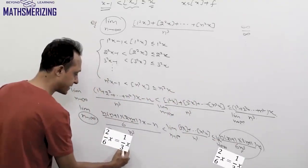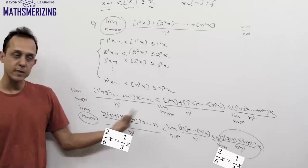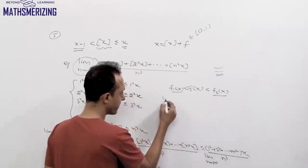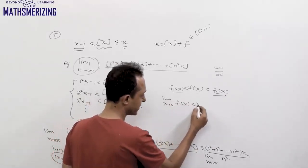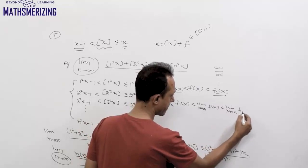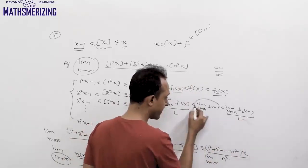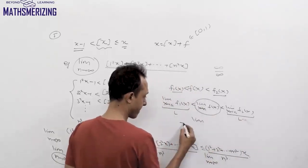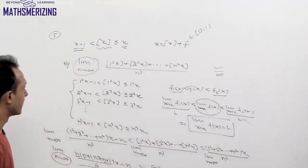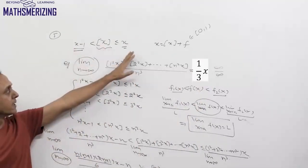Both the left-hand side and right-hand side limits equal x/3. By the Sandwich theorem (squeeze play theorem): if f(x) lies between f₁(x) and f₂(x), and both limits equal L, then the limit of f(x) also equals L. So the value of this limit is x/3.